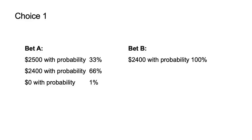For choice one, the player is asked to choose one of the following bets. Under bet A, the player wins $2,500 with probability 33%, $2,400 with probability 66%, and $0 with probability 1%. Under bet B, the player wins $2,400 with probability 100%. When Kahneman and Tversky ran this experiment, 82% of participants chose option B.